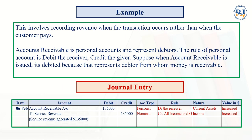Service revenue involves recording revenues when the transaction occurs, rather than when the customer pays the amount. Accounts receivable is a personal account and represents the debtors — it means that we have provided services but money has not yet been received. We will receive this money later from the parties, and those parties are known as debtors of the company, which appear on the asset side of the balance sheet.